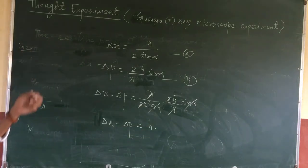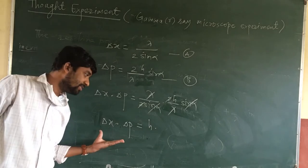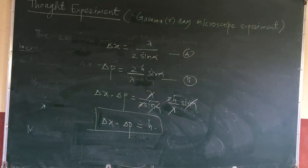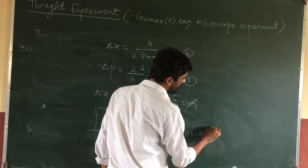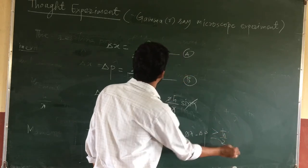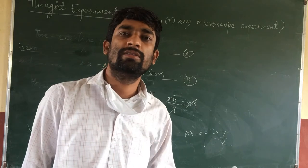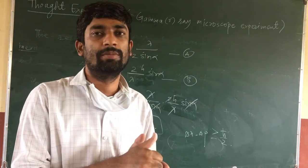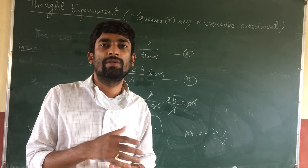The error in measurement of position and momentum is always greater than h. This is the general statement of the Heisenberg uncertainty principle: delta x into delta p is greater than h. For a more accurate expression, delta x into delta p is greater than or equal to h-bar divided by 2. This proves the Heisenberg uncertainty principle — the product of uncertainty in position and uncertainty in momentum is always greater than or equal to h.